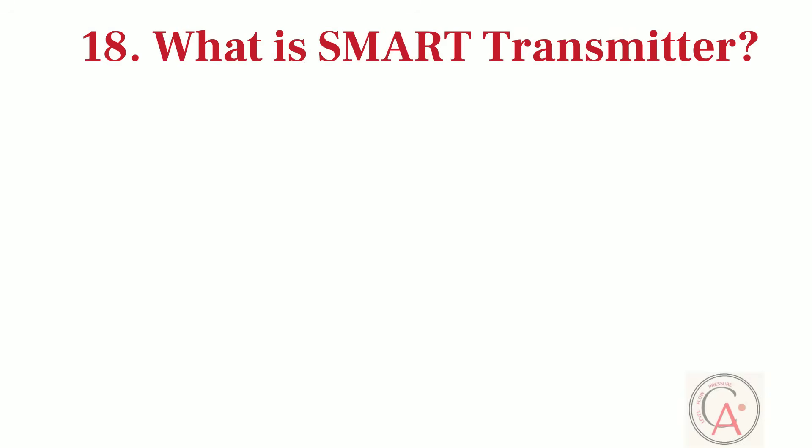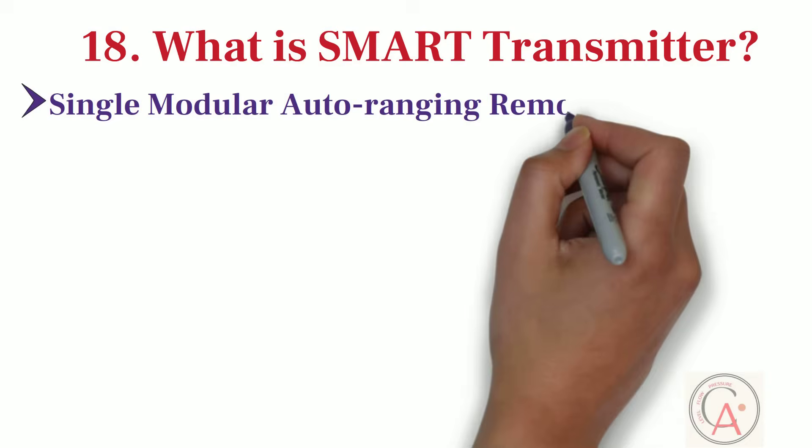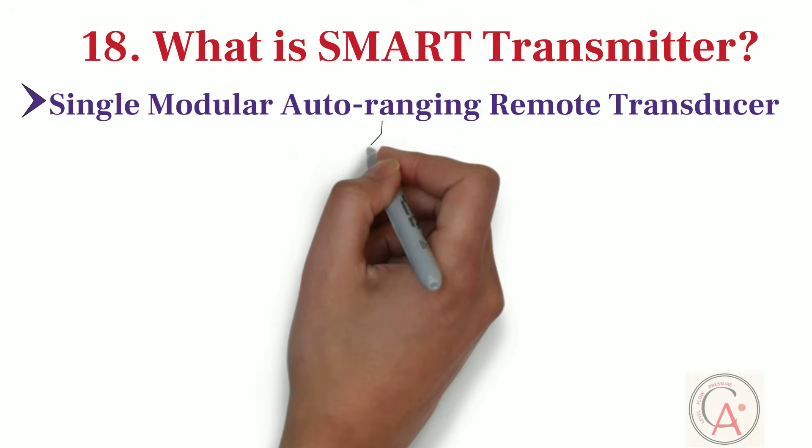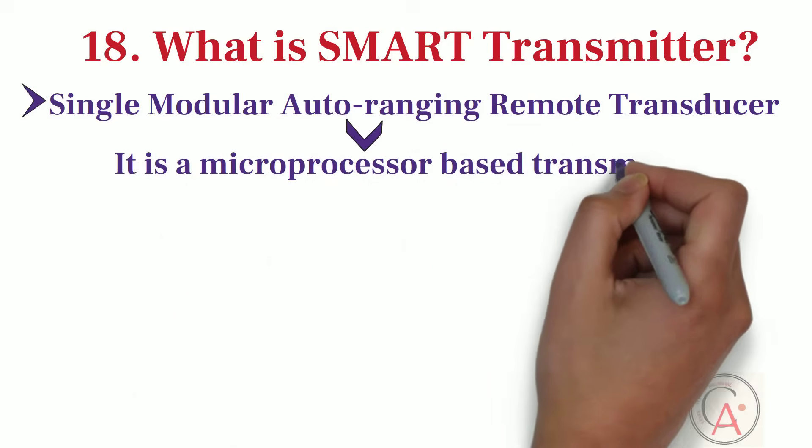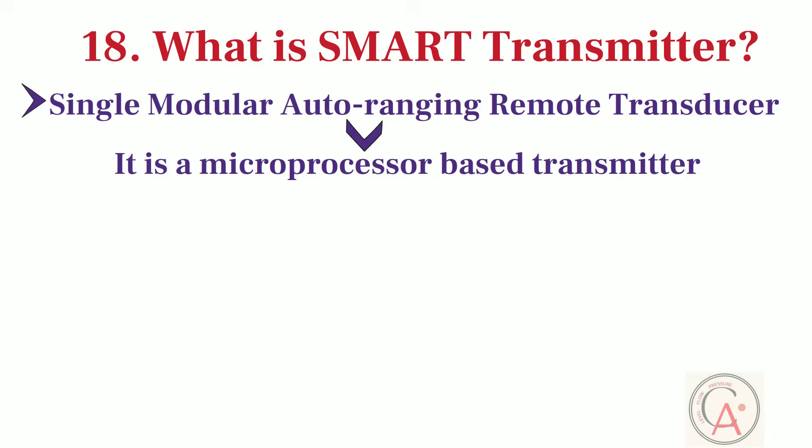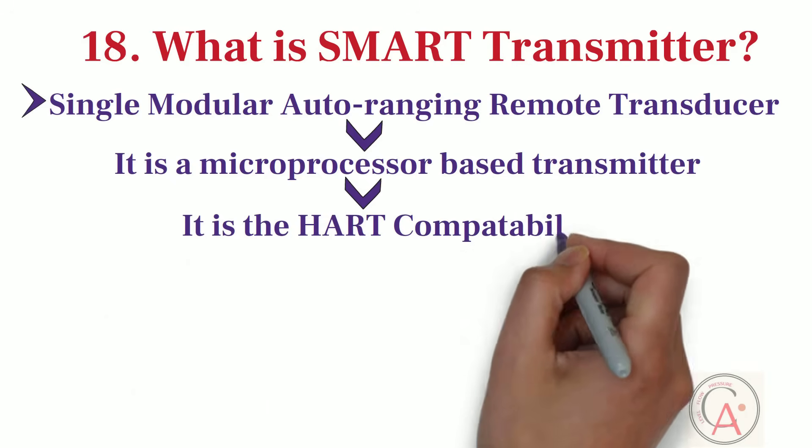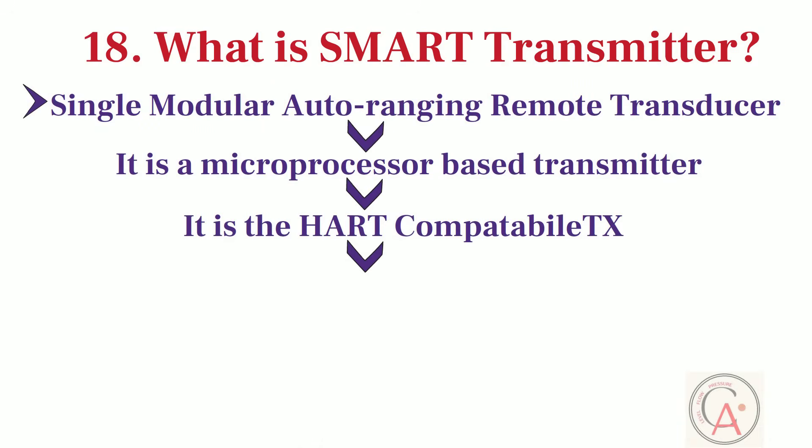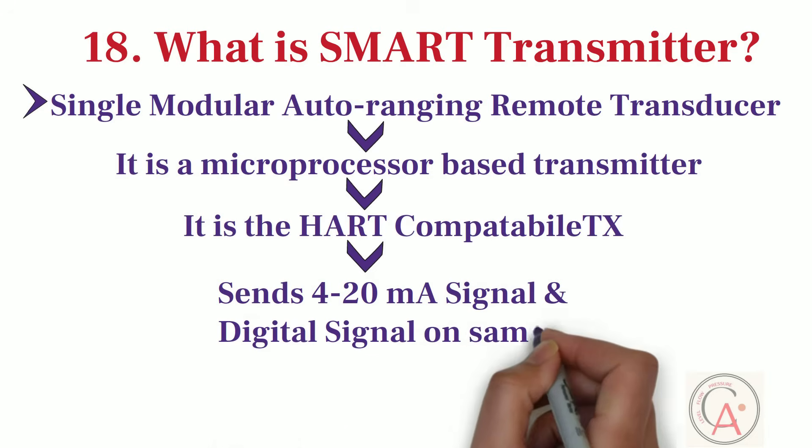Next question is, what is smart transmitter? Single modular auto-ranging remote transducer is known as smart transmitter. A smart transmitter is a microprocessor-based transmitter. And it is the core of the electronics in a device. A smart transmitter is known for its HART compatibility. And it has the capability to send forward a 4-20 mA signal and digital signal on the same line.